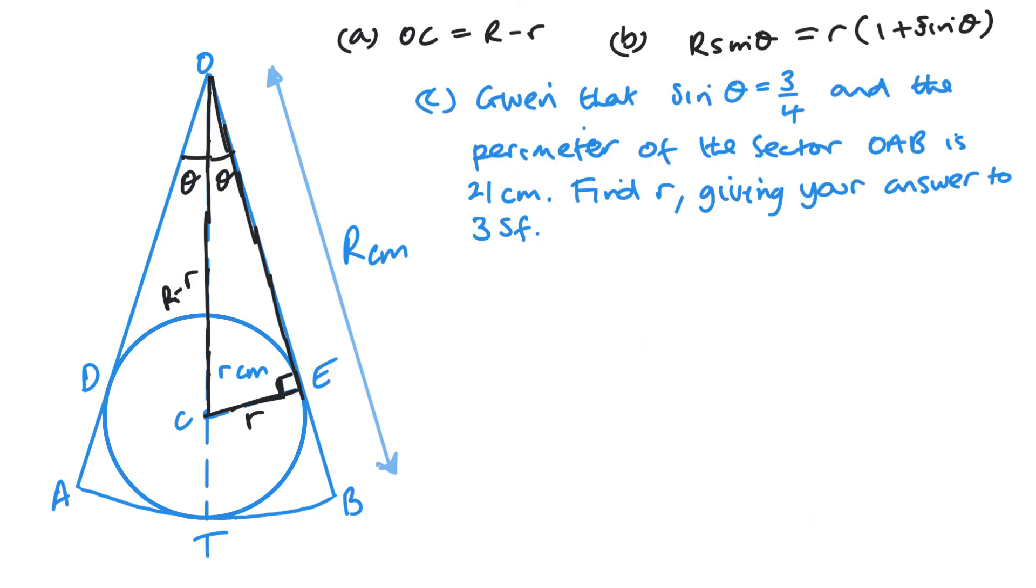So part C, given that sine theta equals 3 quarters and that the perimeter of the sector OAB is 24 centimeters, find little r. So let's start at the top. So we've got r, and then instead of sine theta, let's put 3 quarters, is equal to r times 1 plus 3 quarters. So we've got 3 quarters large r. And this can be, if we multiply through by 4, 3 capital R equals 7 small r. And that we're going to use in a moment.